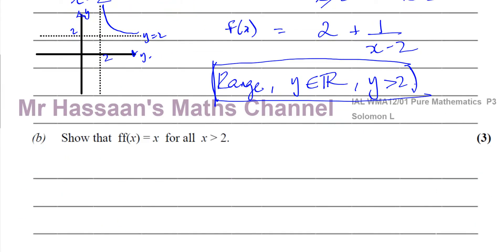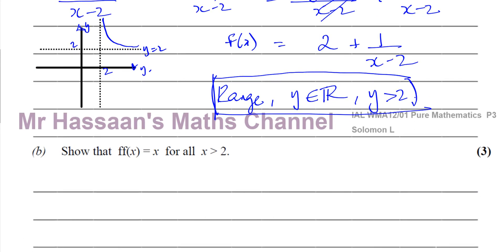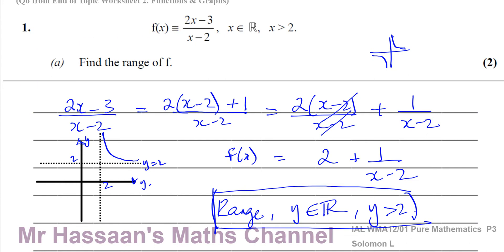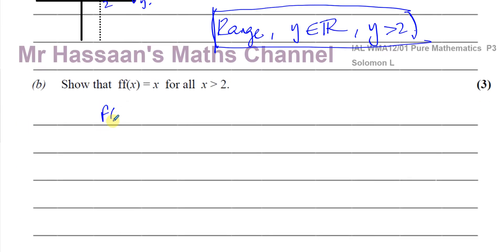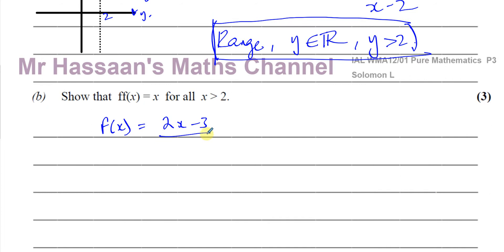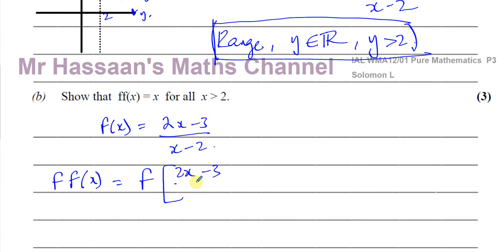Part B says: show that f(f(x)) = x for all x > 2. Basically, if we take f(x) = (2x − 3)/(x − 2) and substitute it back into f itself, we should end up with x. What we're going to do is replace every x in the function with (2x − 3)/(x − 2). So we put (2x − 3)/(x − 2) inside the function f, replacing both occurrences of x.